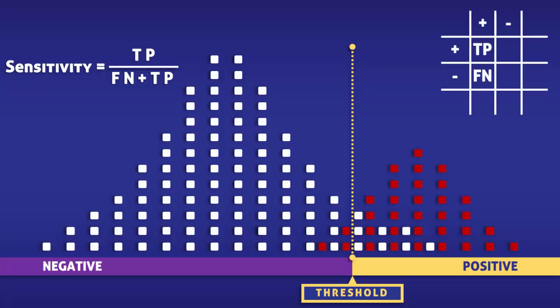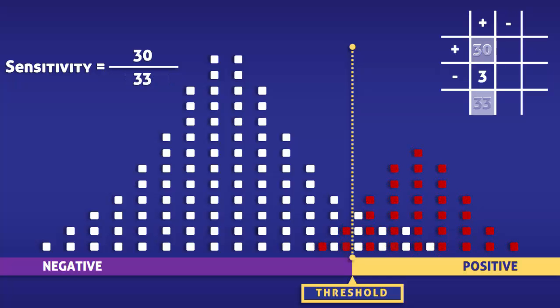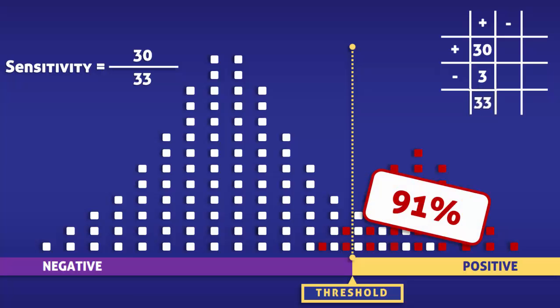In this cohort, there are 30 true positives and 3 false negatives. Thus, there are 33 people with the condition. By dividing 30 by 33, we find that the sensitivity of the test is about 91%.